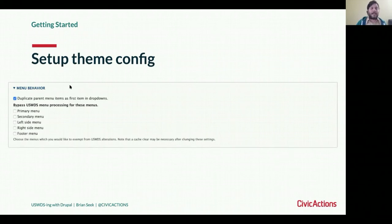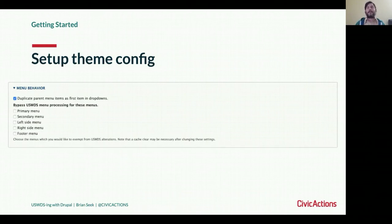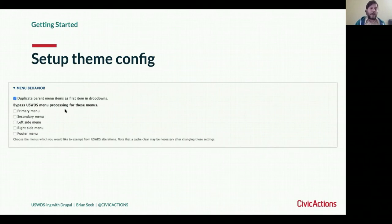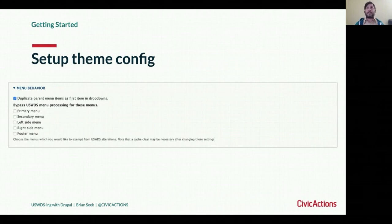There's also a menu behavior setting. If you check 'duplicate parent menu items as first item in dropdowns,' it creates a multilevel menu — making the first link a button and repeating that link as the first item in the dropdown, so you don't need dummy links. There's also a setting for bypassing menu processing for specific menus. If you have a custom menu that another Drupal module needs to handle differently, you can check that and it won't receive any USWDS processing.